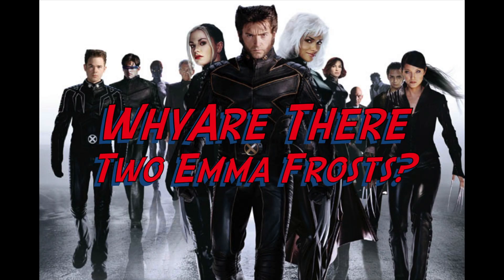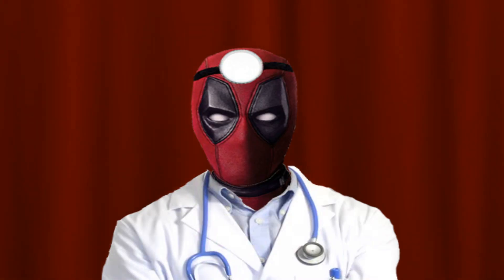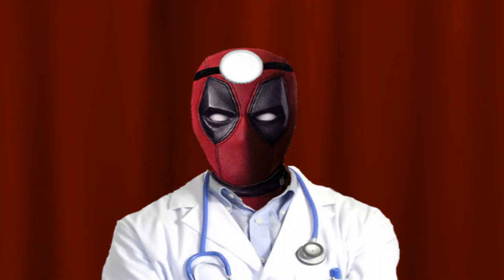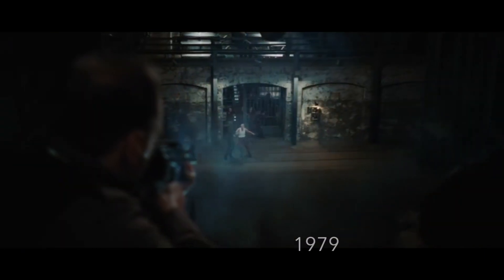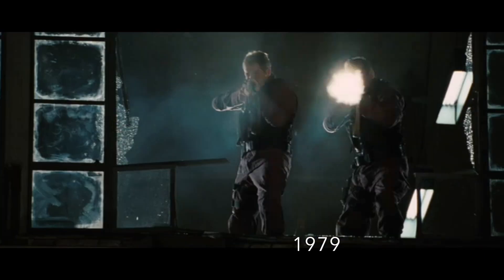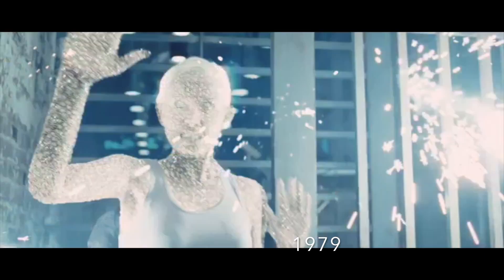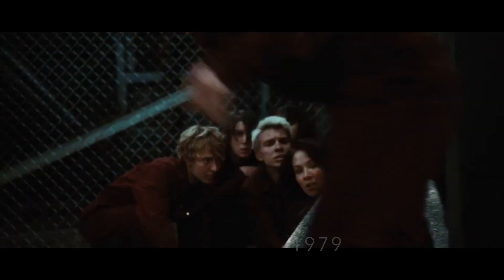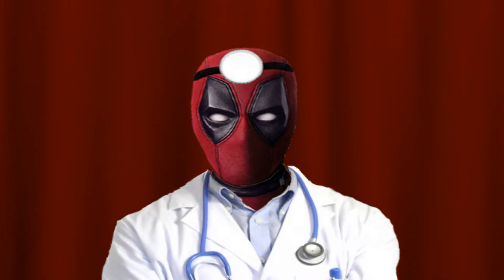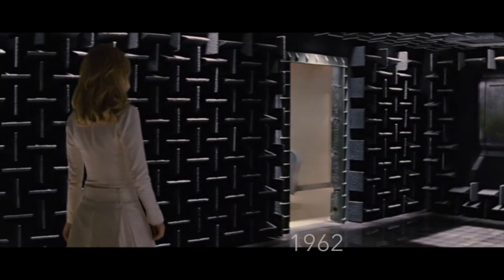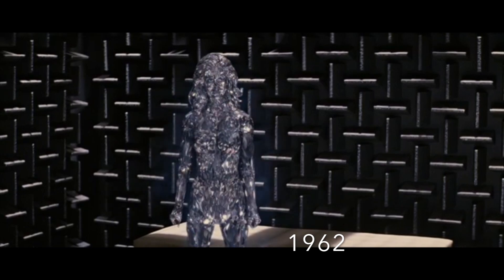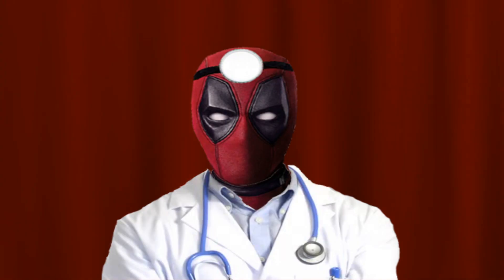So first up — this is a thing that's been throwing people off for a long, long time. Why are there two Emma Frost type characters in these movies? In X-Men Origins we were introduced to a character named Emma who could turn her skin into diamond-like material. But then in X-Men First Class we were introduced to Emma Frost, another character who could turn their skin into diamond-like material. So what the heck, Fox? Why do we have two Emmas?